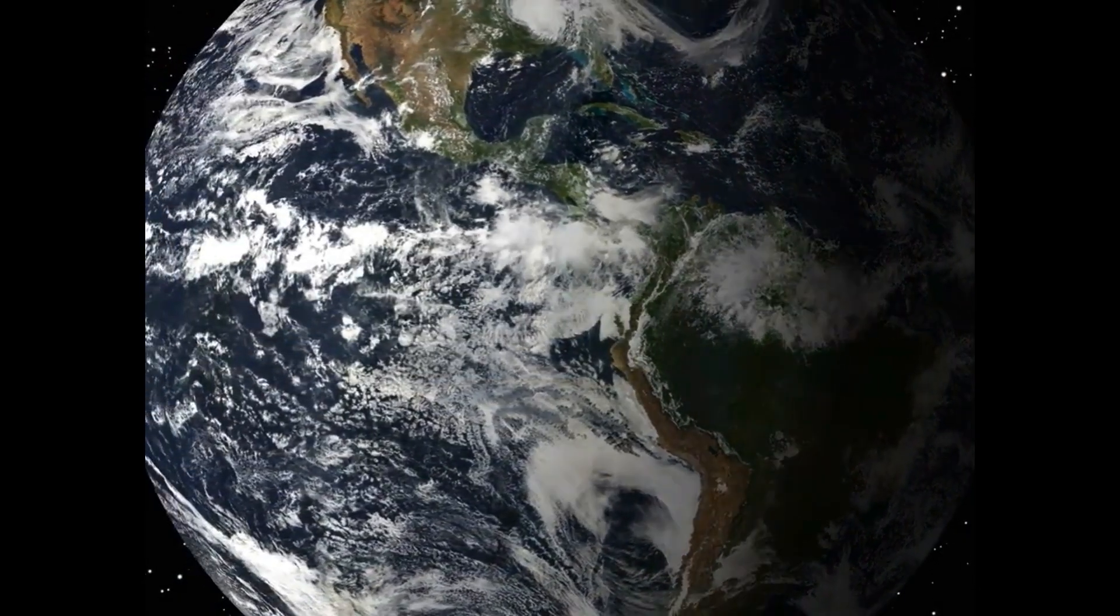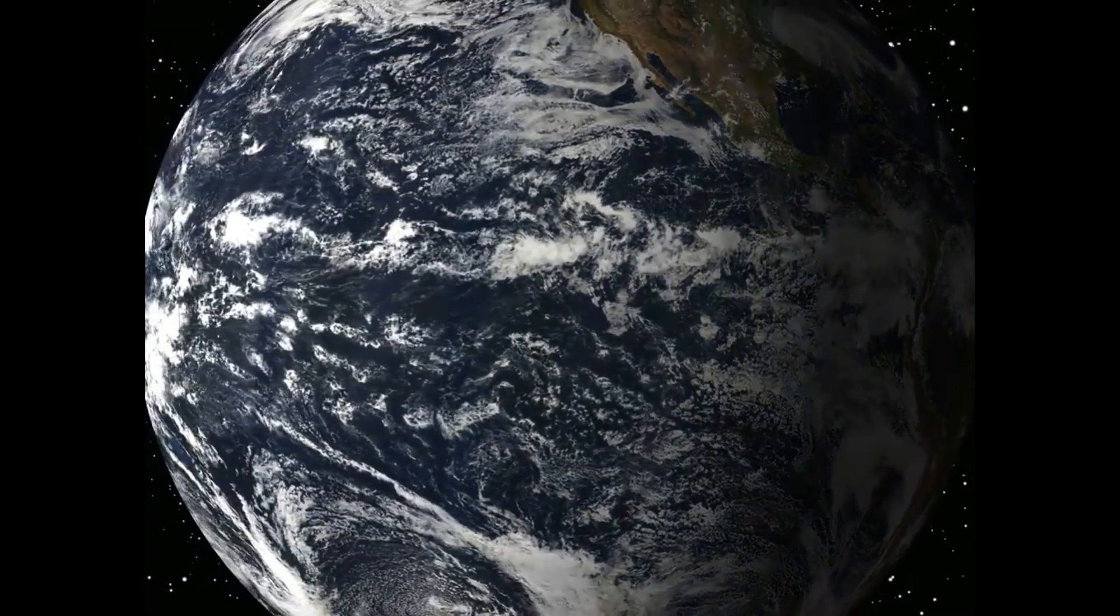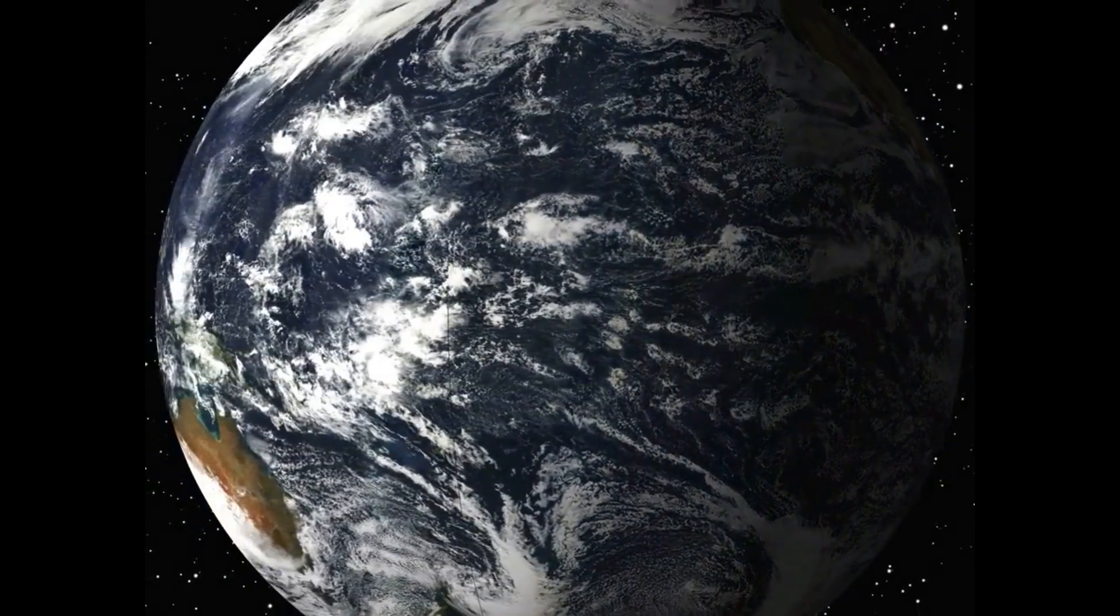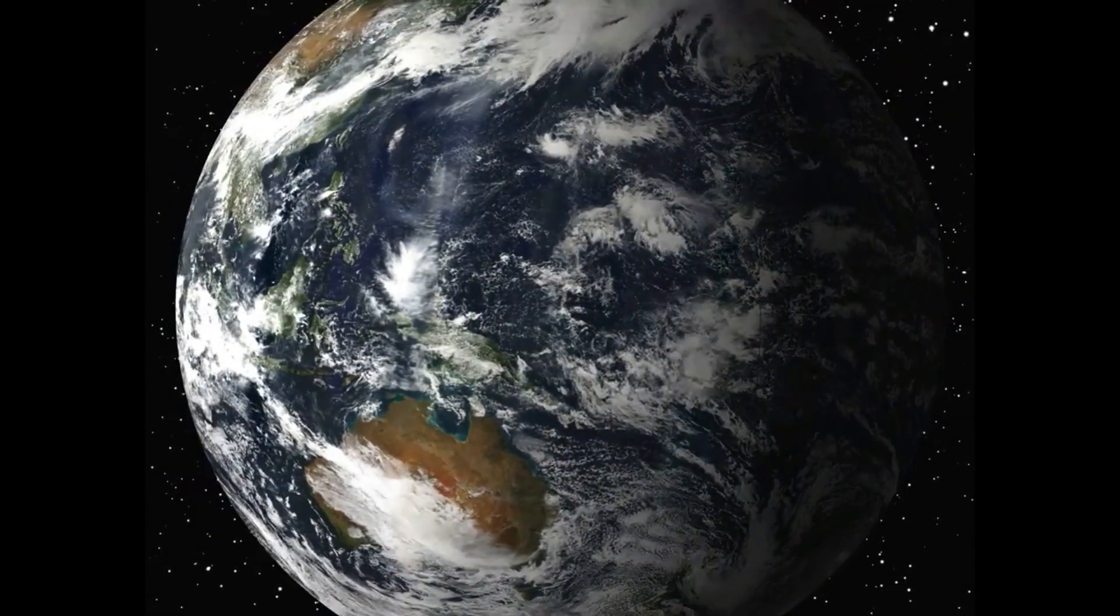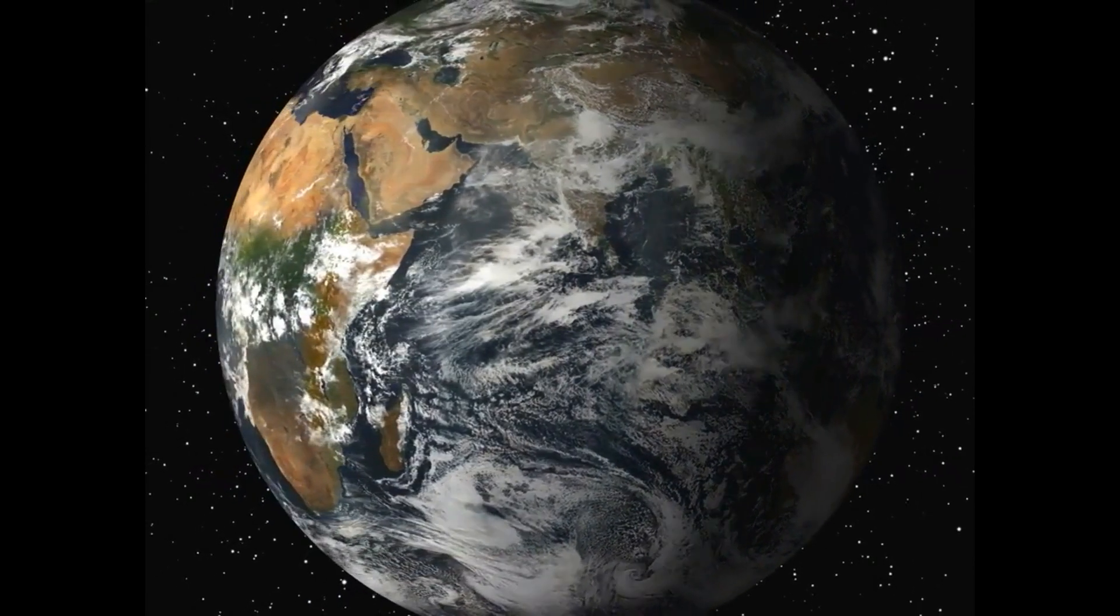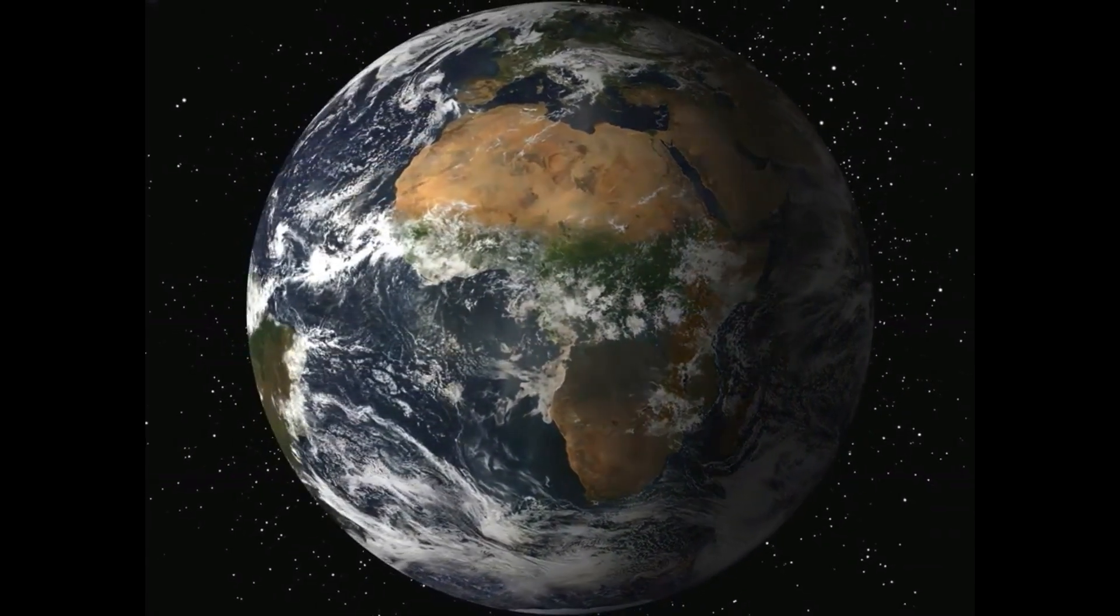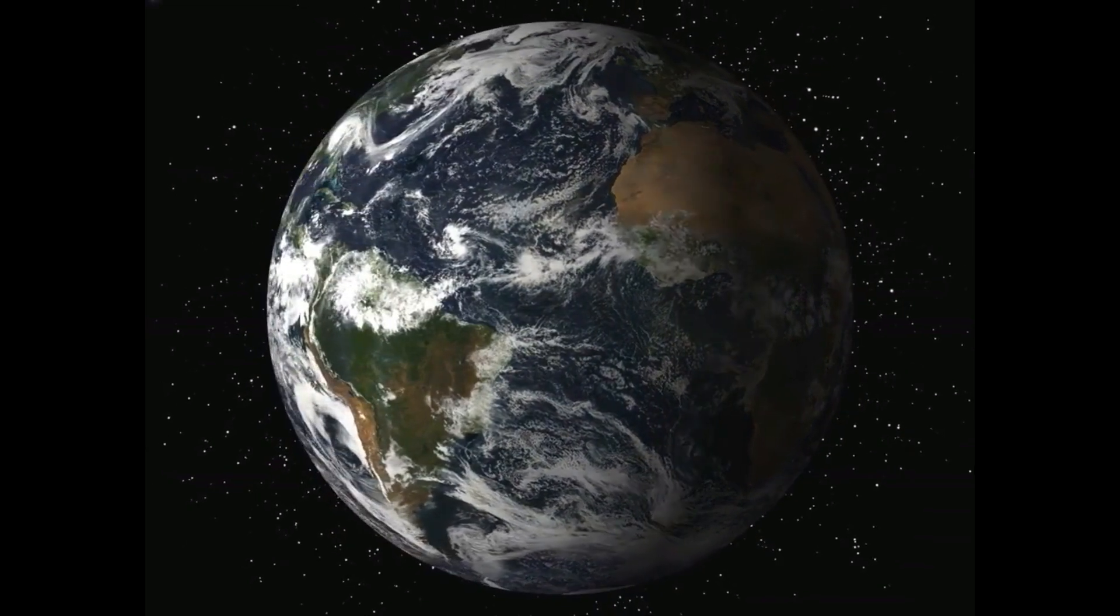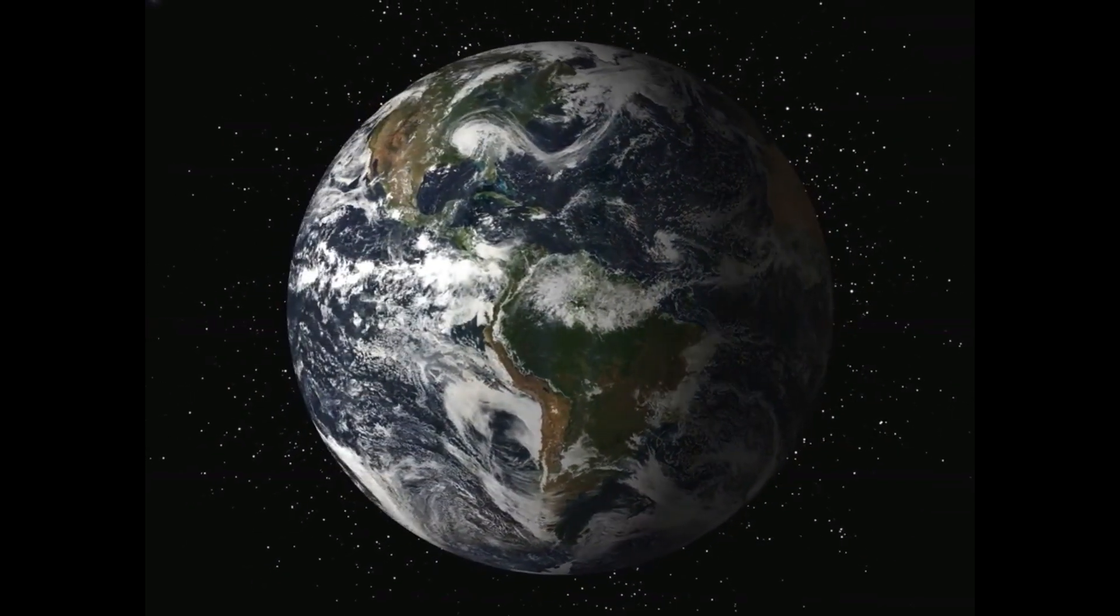At just 4.2 light-years away, Proxima b may be the closest exoplanet with a mild temperature, but it receives about 30 times more extreme ultraviolet radiation than Earth. Ross 128b, on the other hand, is the quietest nearby star to host a temperate exoplanet.